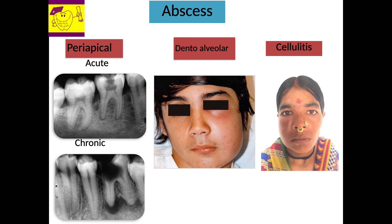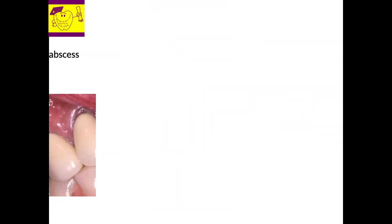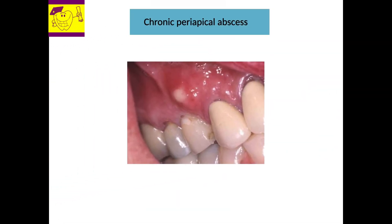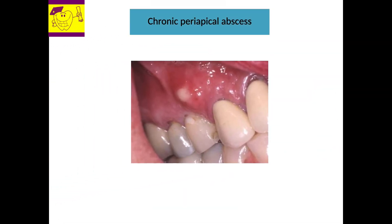So far we have seen the acute sequelae of events. If the virulence of the organism is decreased and the immunity of the individual is high, there could be a long-standing intraoral swelling with a sinus opening and pus discharge, which is called a chronic periapical abscess.